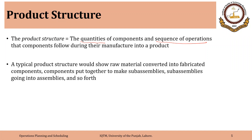A typical product structure would show raw material converted into fabricated components, then components put together to make sub-assemblies, and sub-assemblies going into assemblies. This is a bottom-up flow of product construction — first raw material is converted into fabricated components, those components are put together to make sub-assemblies, and finally sub-assemblies go into assemblies. Some formats of bill of materials show this typical information.